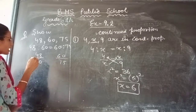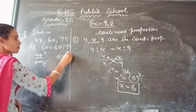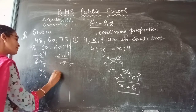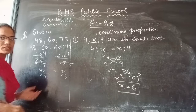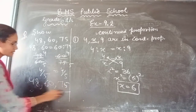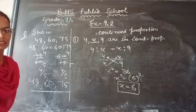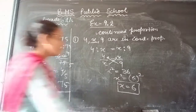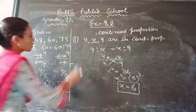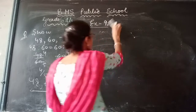Simplifying both ratios gives 4 by 5 equals 4 by 5. Since both ratios are equal, 48, 60, and 75 are in continued proportion. The rest of the questions in this exercise will follow the same method.